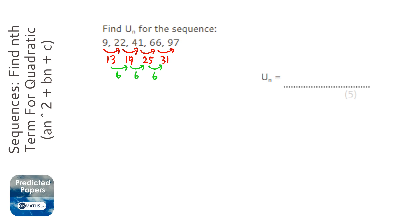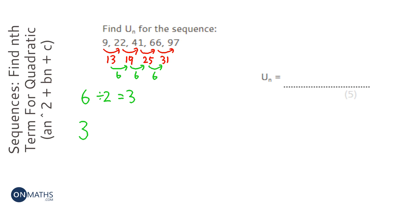The way of dealing with that is to get the difference of the differences and always halve it. So we end up with 3. Now that 3 will go before an n squared, so we know our nth term will involve 3n squared. But we don't know what the rest of it is yet.